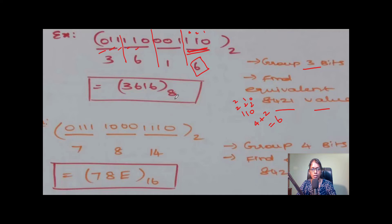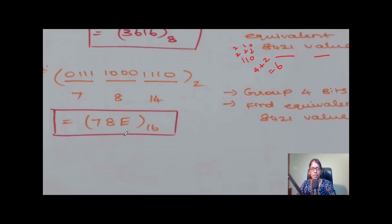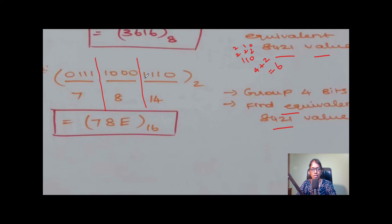To find the hexadecimal value from a binary number, we use the same approach but group into four bits instead of three. Write down the binary number and group into four bits — for example, 1 1 1 0. For octal we group into three bits; for hexadecimal we group into four bits. Find the equivalent 8421 value: 8 plus 4 plus 2 gives 14, and 14 is represented in hexadecimal as E.